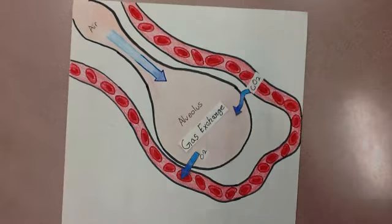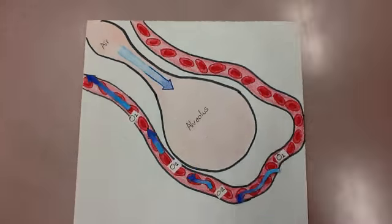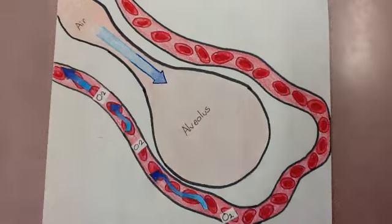Carbon dioxide transfers from the blood and into the alveolus, and oxygen diffuses into the red blood cells that are inside the capillaries.